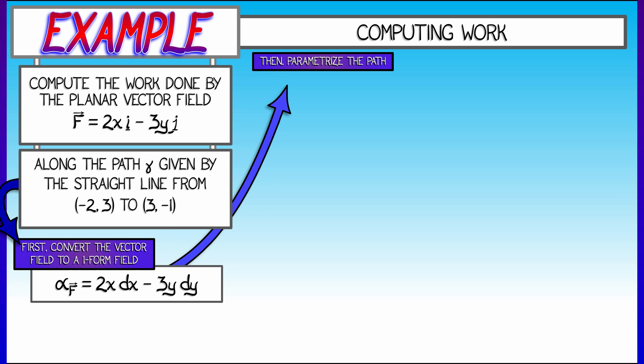Then you parametrize the path. This is going to be simple. The x-coordinate is going to be negative 2 plus 5t. The y-coordinate, 3 minus 4t, as t goes from 0 to 1. You can see that's a straight line path. You can see that when t is 0, you're at the point negative 2, 3. And when t is 1, you're at the point 3, negative 1.